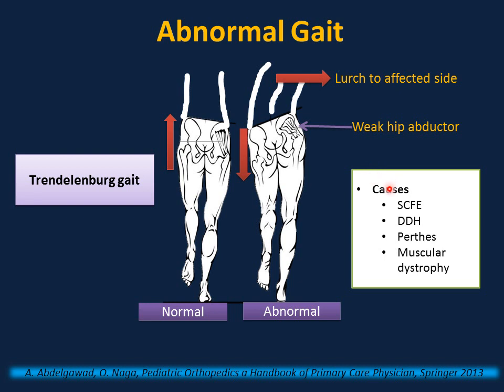Possible causes of Trendelenburg gait include slipped capital femoral epiphysis, DDH, Perthes disease, and muscular dystrophy.